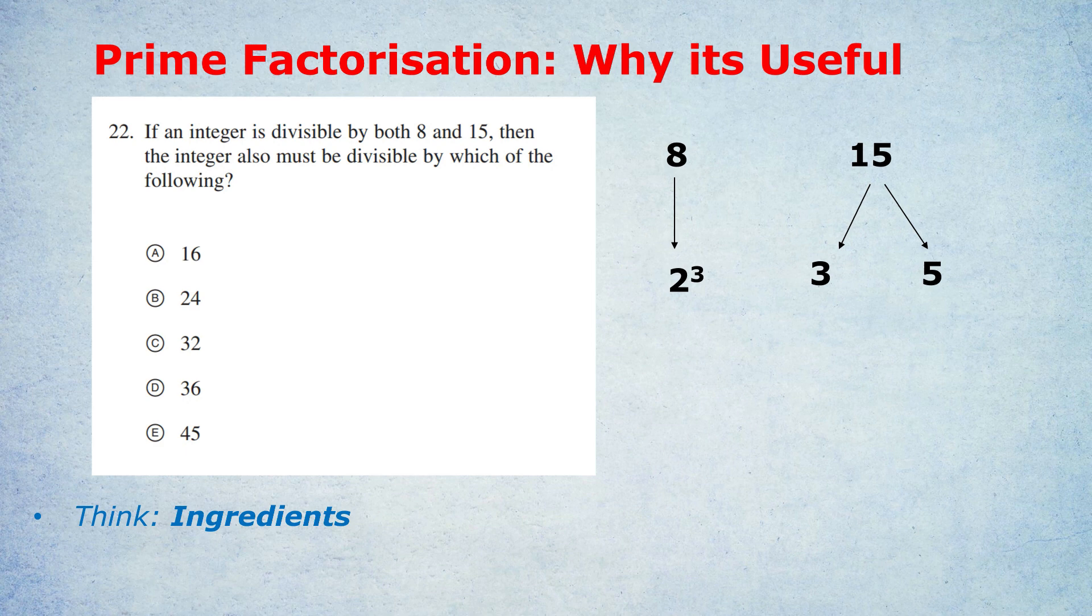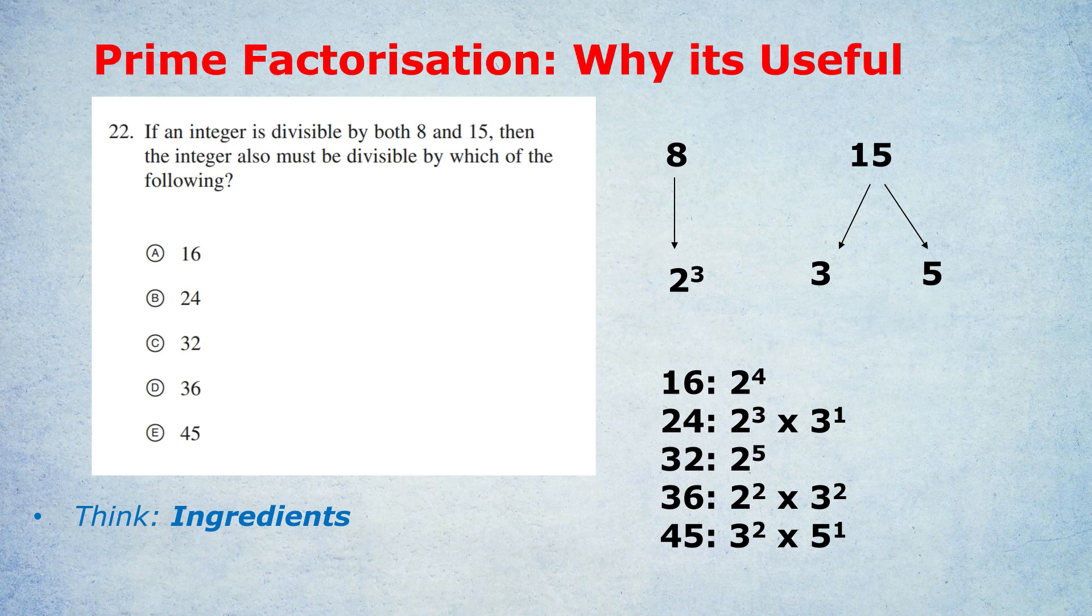But does it have enough ingredients to make the next 5 recipes that you see on screen? Can we make a 16 with those ingredients? And the answer is no. I've broken down each of the 5 numbers they've given us. Look at 16. 16, if you break it down, is 2 to the power of 4. So 16 has 4 twos as its ingredients. But our number, our mystery number, only has 3 twos guaranteed. It might have more, but we only know for sure that it's got 3 twos. Therefore, we can't guarantee that we have enough ingredients to make 16.